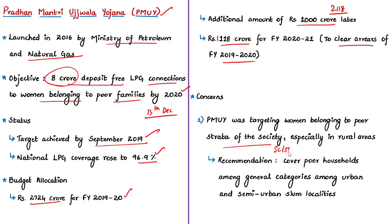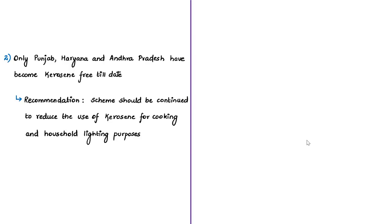There are many poor households among the general category living in urban and semi-urban localities who also need to be covered under this scheme. Therefore, the committee recommended extending the scheme to cover poor households in urban and semi-urban slum areas as well. This will help achieve higher LPG coverage by providing connections to households without LPG access. The next concern raised by the committee is regarding the continued use of kerosene for cooking and household lighting purposes.